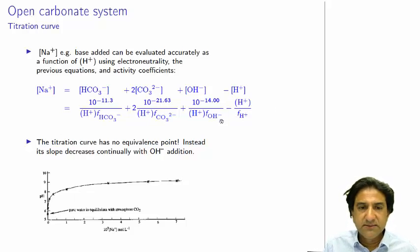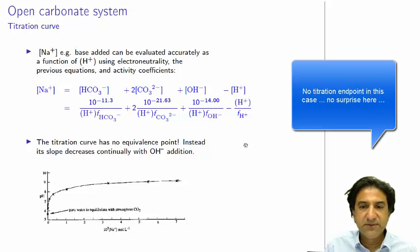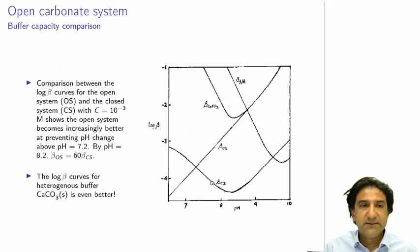And then we can plot this out as a function of pH, negative log H, and we get this graph. So the titration curve that we get from this thing here has no equivalence point, provided we do it slowly, of course. If we do it very fast, it's going to equalize. But if we do it very slowly, it continually decreases. So, no titration endpoint in that case.